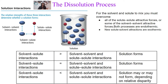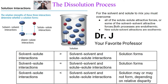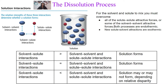Remember those two things: the solvent is the dissolving agent, and the solute is being dissolved. With that being said, we are going to see three interactions in this whole dissolution process. We're going to see a solvent reacting with a solvent interaction, then a solute interacting with another solute, and finally a solvent interacting with a solute. These are the three interactions we see during this process.